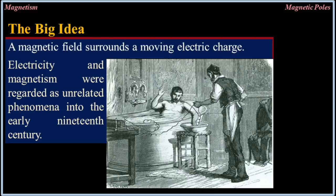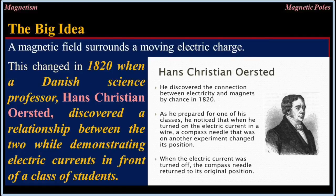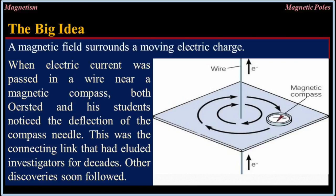Electricity and magnetism were regarded as unrelated phenomena into the early 19th century. This changed in 1820 when a Danish science professor, Hans Christian Ørsted, discovered a relationship between the two while demonstrating electric currents in front of a class of students. When electric current was passed in a wire near a magnetic compass, both Ørsted and his students noticed the deflection of the compass needle. This was the connecting link that had eluded investigators for decades.